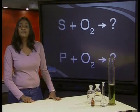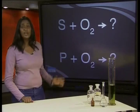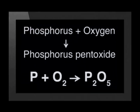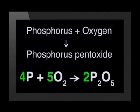Do you think that you could write the balanced chemical equations for these reactions? The reaction for sulfur and oxygen is S + O2 → SO2. This reaction is already balanced. The reaction for phosphorus is a little more complicated: P + O2 → P2O5. To balance this reaction, we need to add four phosphorus atoms and five oxygen molecules to the left of the equation, and two phosphorus pentoxide particles to the right. So the balanced chemical equation is 4P + 5O2 → 2P2O5.